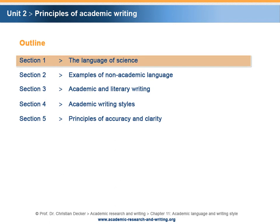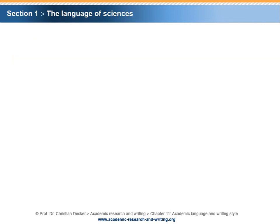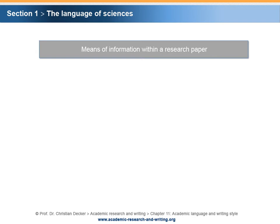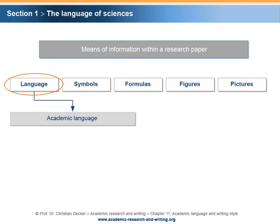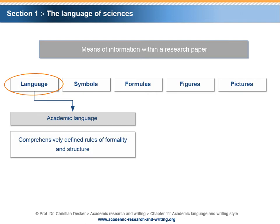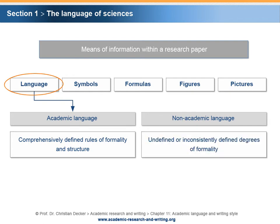Section 1 – The language of science. Let us try to define the language of science. There are several means to state information within a research paper: language, symbols, formulas, figures, and sometimes pictures. The language used to present a research project is academic language. Academic language has to follow comprehensively and generally defined rules of formality and structure. It differs widely from non-academic language, which is characterized by undefined or inconsistently defined levels of formality. Do not use non-academic language in academic writing.